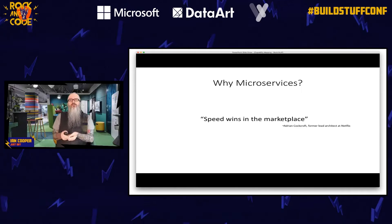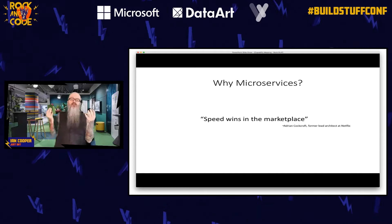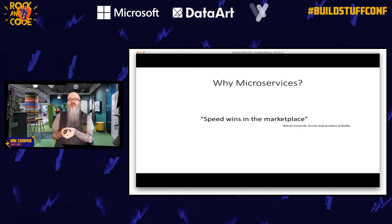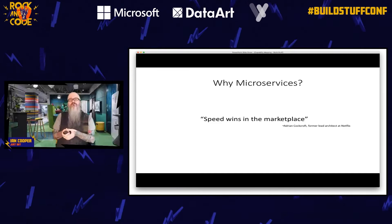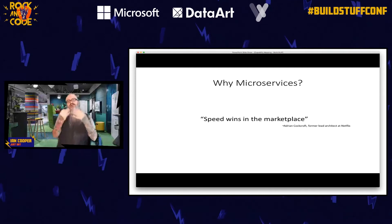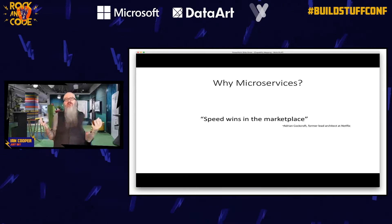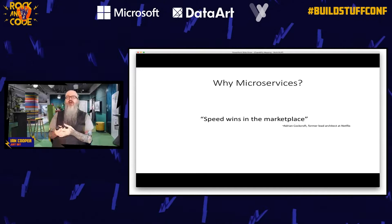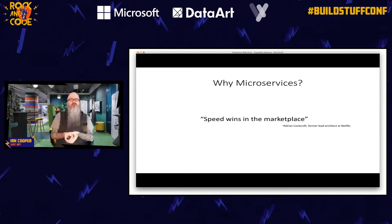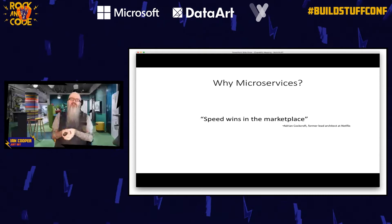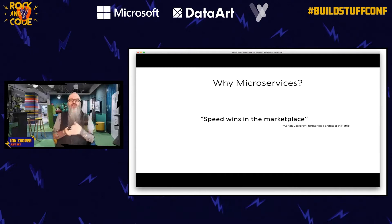Adrian Cockcroft at Netflix pioneered what he called fine-grained SOA — very close to what we think of as microservices today. He coined the phrase 'speed wins in the marketplace,' asserting that continuous delivery has become the entry standard: your team finishes a story and can drop it immediately to customers. If you're not releasing multiple times a day, you'll be outcompeted. Netflix invested in fine-grained SOA as a way to achieve that velocity.